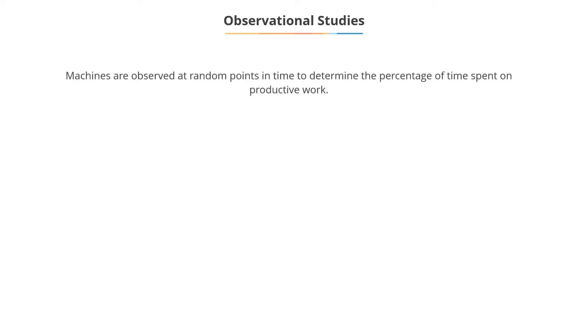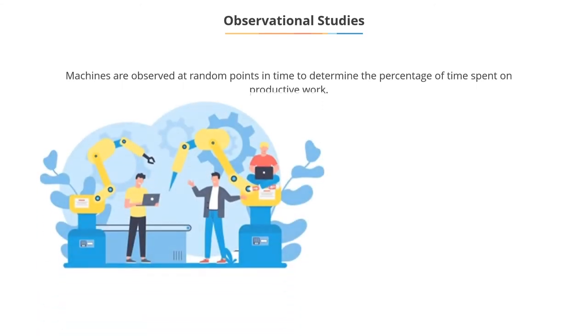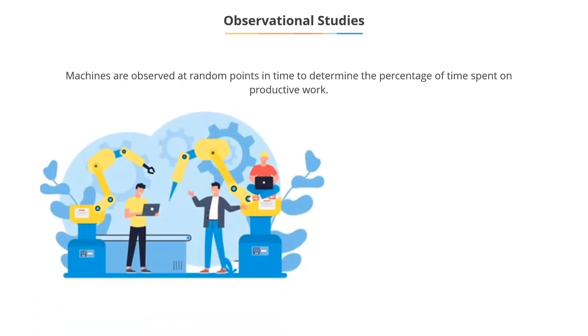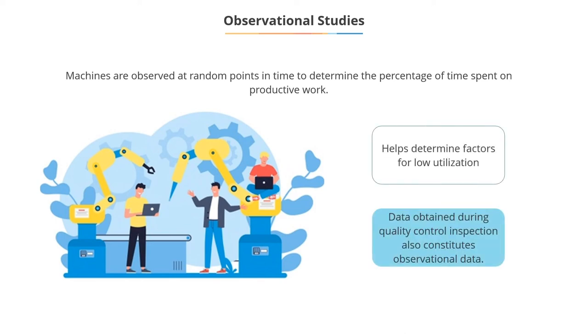Similarly, in organizations, costly machines are observed at random points in time to determine the percentage of time spent on productive work. Causes for low utilization can be ascertained if required. Data collected during inspection for quality control also constitutes observational data.